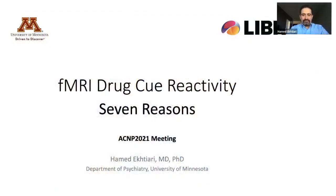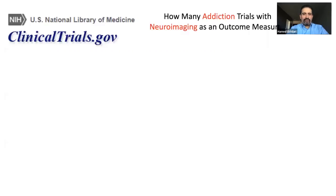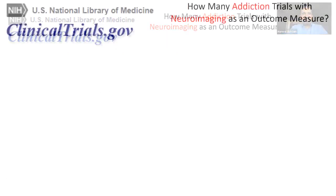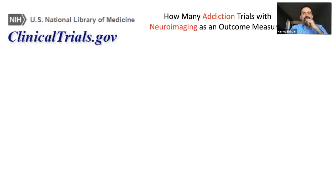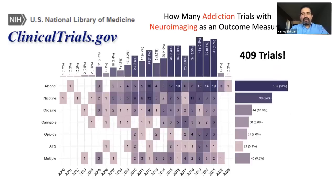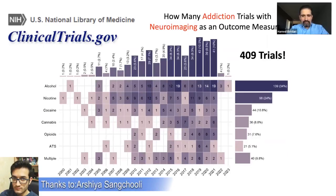And I have seven reasons for that. If you take a look in clinicaltrials.gov, how many trials do we have in addiction that have neuroimaging as an outcome measure? We have 409 trials up to something like two weeks ago that we did the systematic review, using neuroimaging markers in addiction.